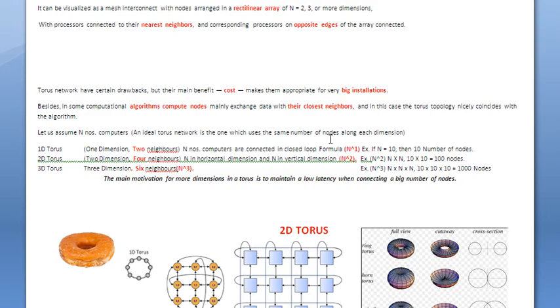This TORUS network mainly benefits when using high-performance computing algorithms that exchange data with close nearest neighbors. In that way, we get the benefit of the TORUS network.